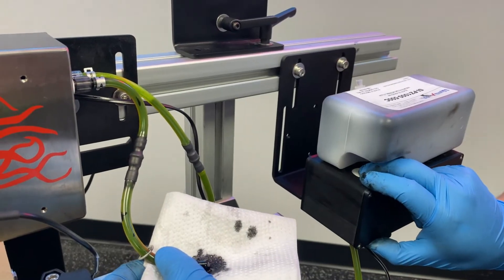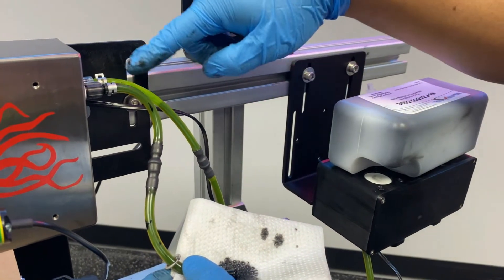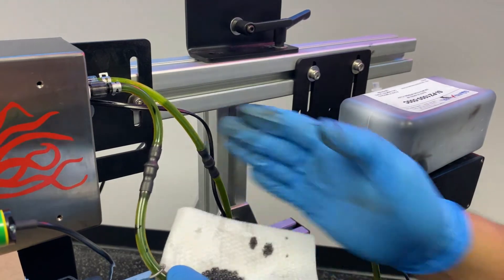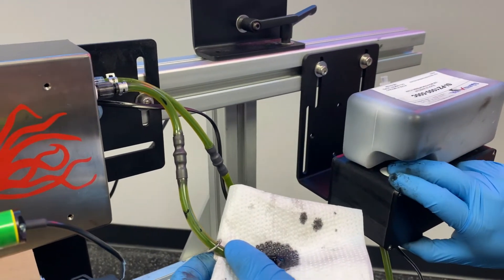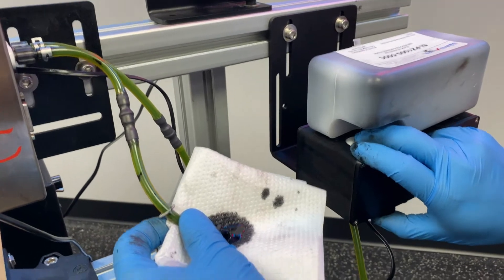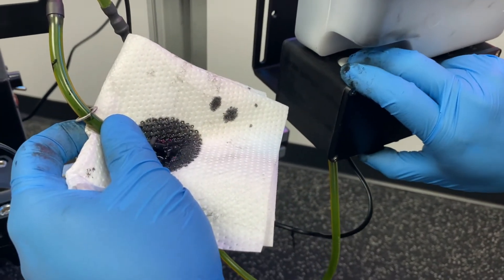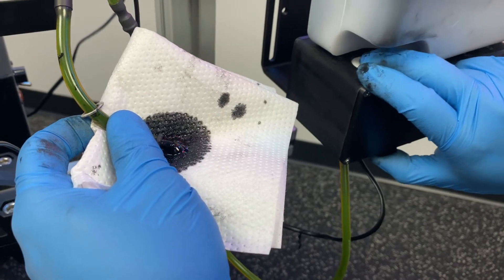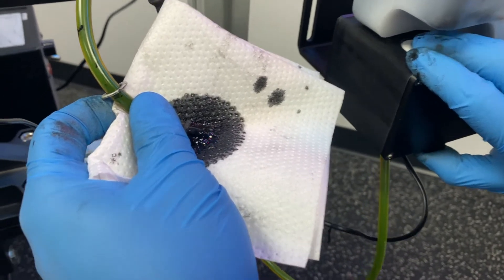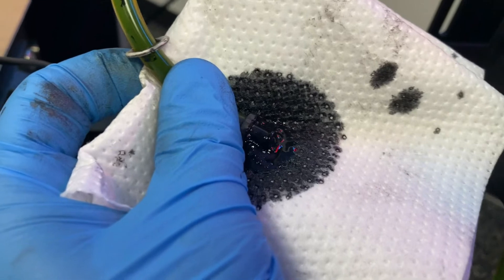You should begin to see ink traveling up the ink line and passing that check valve. Now our whole goal here, especially on this output check valve portion, is to keep priming until we no longer see any air bubbles come out, which you'll notice right there.